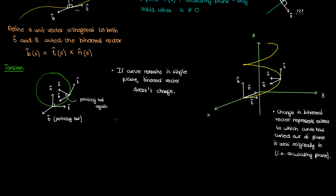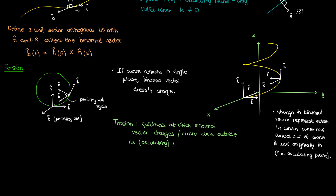This is where torsion comes in. Just like how curvature represented the quickness with which the unit tangent vector of a curve changes as we go along the curve, the torsion tau represents the quickness with which the unit binormal vector changes as we go along the curve — or how quickly and strongly the curve curls outside its oscillating plane. We measure this by taking the derivative of the binormal vector. The torsion, generally a function of position along the curve, is directly related to db by ds. Since tau is a scalar while db by ds is a vector, we need to multiply torsion by the vector pointing in the direction the curve contorts out of its plane.